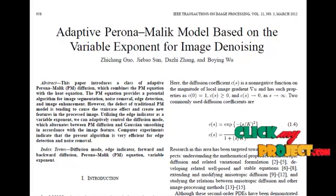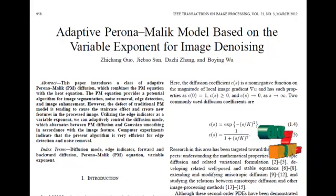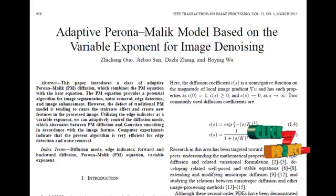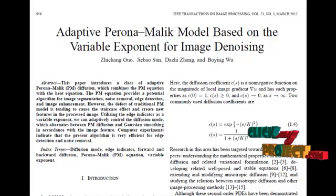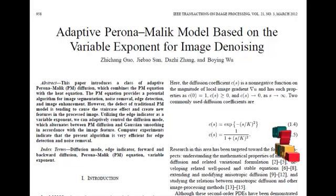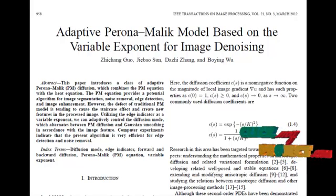This method proposes an adaptive Paranormalic method based on variable exponent. Using an edge indicator, we roughly segment the image into two subregions: inside regions and the regions nearby boundaries. By the edge indicator, the diffusion mode is adaptively controlled in the inside region.